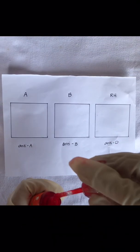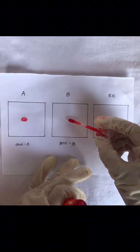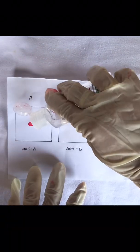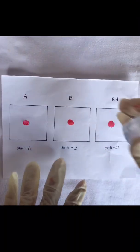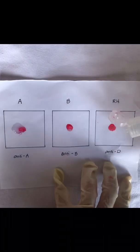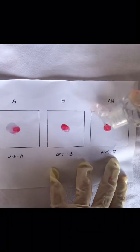We will put blood on A, B, and RH. And we will put antiserum A on A, antiserum B on B, and antiserum D on RH.